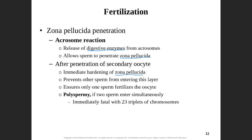The zona pellucida instantly hardens to prevent any other sperm from entering into the secondary oocyte, because we only need 23 chromosomes — we can't have any more. If two sperm enter by chance — polyspermy — now we've got 23 from sperm one, 23 from sperm two, and 23 from the secondary oocyte, giving us triplets of chromosomes. That's bad — that can be fatal.